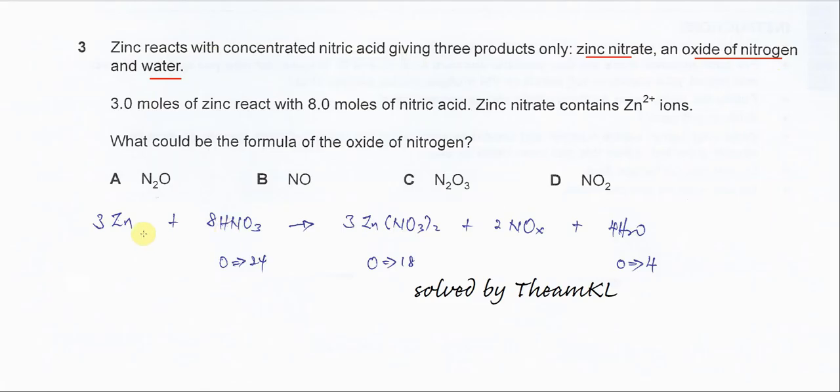So first you need to form the equation like this. Zinc with HNO3 forms zinc nitrate, NOx (we need to find out what is that), and H2O.